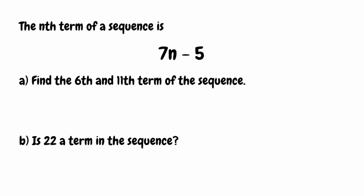For the 6th term of the sequence we substitute n equal to 6. Substituting into our expression: 7 times 6 in a bracket, then minus 5. 7 multiplied by 6 is 42, then we take away 5, which gives us 37. So 37 is the 6th term in the sequence.